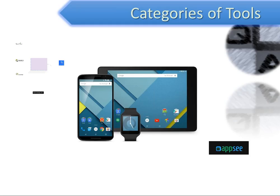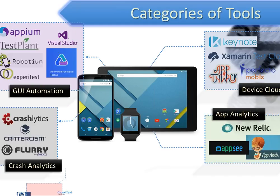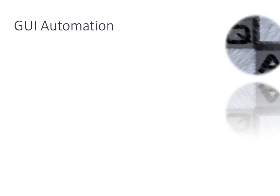Here's a map giving you a concept of the different types of companies within these categories. There are a couple more categories like crash analytics and app analytics, and continuous integration at the bottom — we won't talk about that today, but it helps with the build system. Everything else we will discuss in detail.